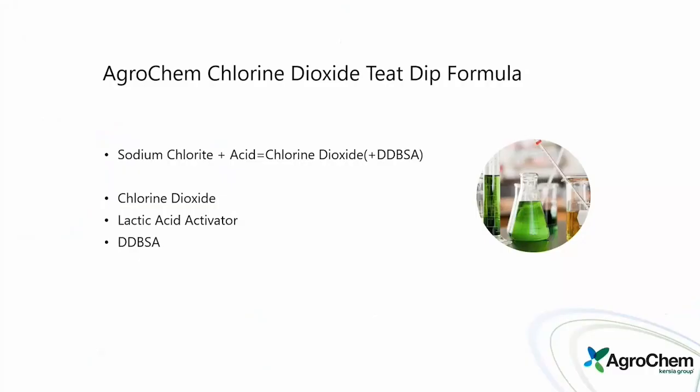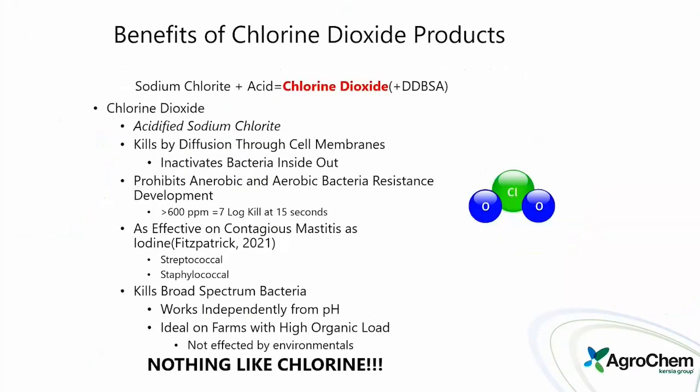The last product is chlorine dioxide. Our t-tip formula is sodium chloride plus acid equals chlorine dioxide, and we have DDBSA in there as well. Ours use lactic acid as the activator. Chlorine dioxide — also known as acidified sodium chloride — kills by inactivating bacteria from the inside out through cell membranes.